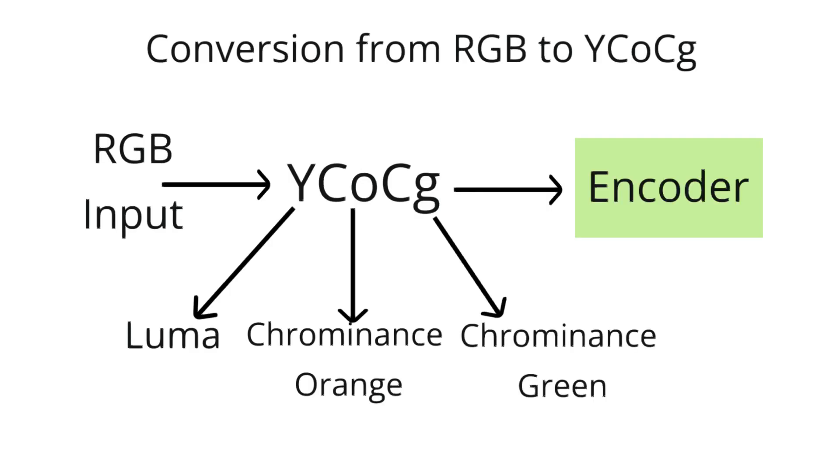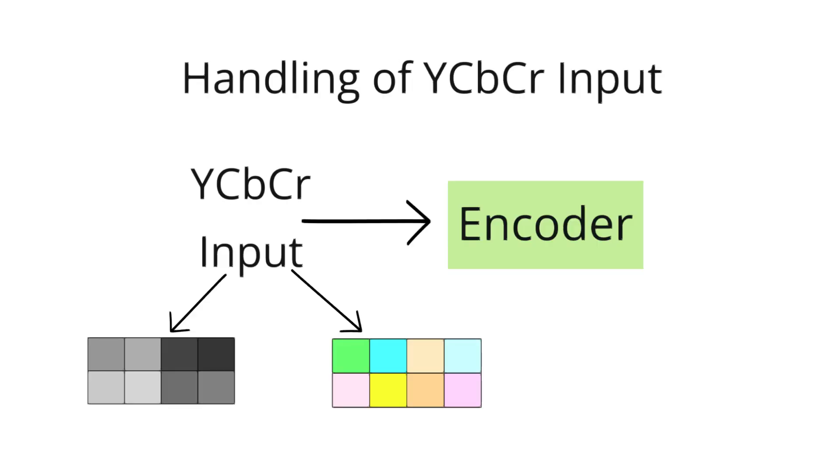In summary, by converting RGB to a color space with separate luma and chroma components, the compression algorithm can exploit human visual system characteristics where the eye is less sensitive to changes in color than to changes in brightness. This allows for more aggressive compression of the chroma components without significantly affecting the perceived image quality.